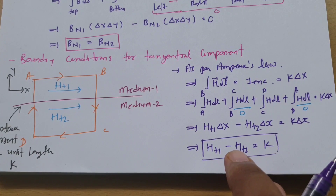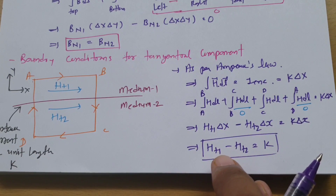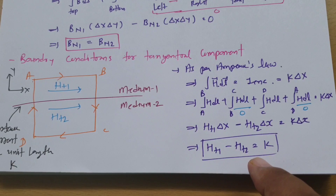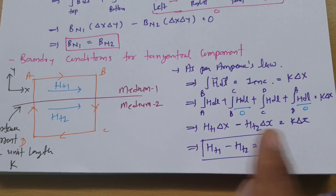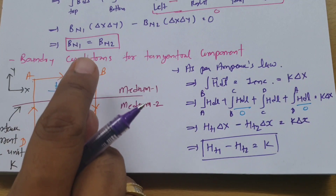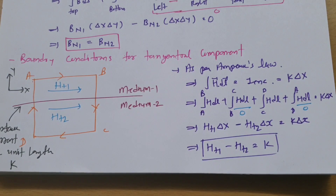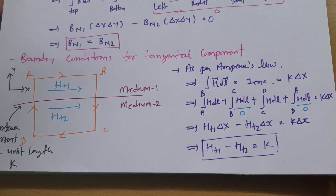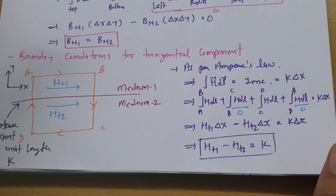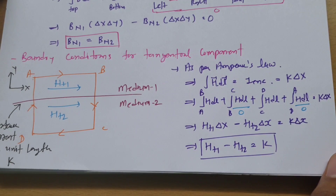Where K is the surface current per unit length. For the tangential component, there is discontinuity in the magnetic field, but for the normal component there is no discontinuity. This is all about magnetic boundary conditions. In the next session, an example based on magnetic boundary conditions will be explained.